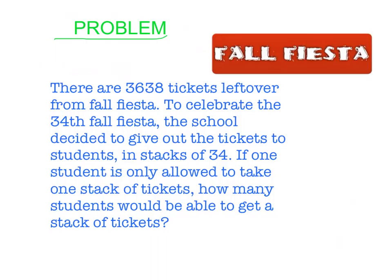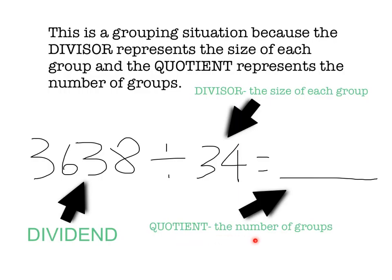This is a grouping situation because the divisor represents the size of each group and the quotient represents the number of groups.